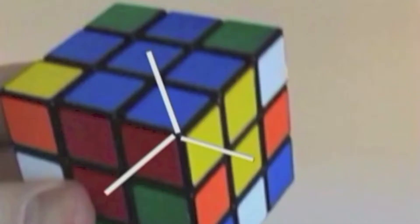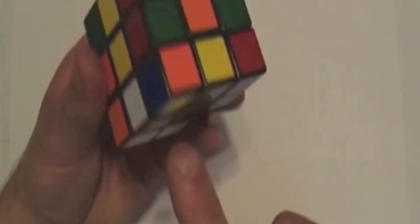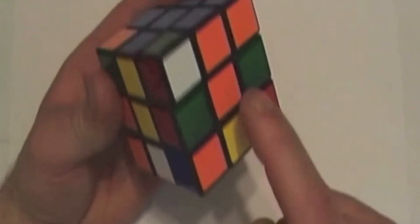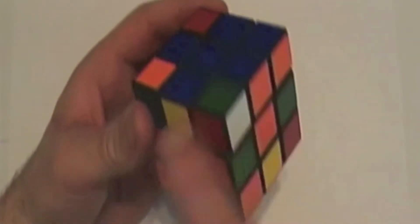Remember, our goal is to get the same color corner to line up with the same color center squares. So here we have orange, blue, and yellow. Orange, blue, yellow. It's in our right-hand column.